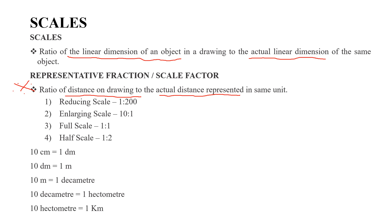We will learn about the types of scales. The first one is the reduced scale — for example, 1:200. The second is the full scale, which is 1:1. The third is the enlarged scale — for example, 10:1. The half scale is 1:2. We will also learn about the representative fraction of each scale type.